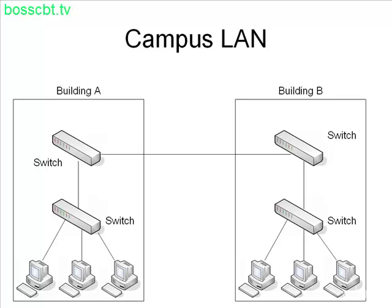But what happens if the distance between building A and building B is not just 100 yards or right next door — what if it's a couple thousand miles away? Then is this still a local area network? The answer is no, and that's where wide area networks, or WANs, come into play.